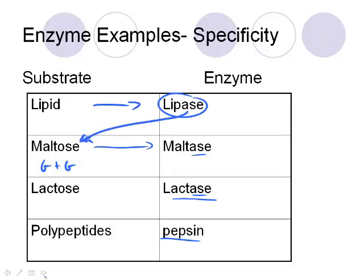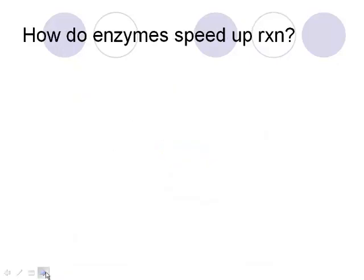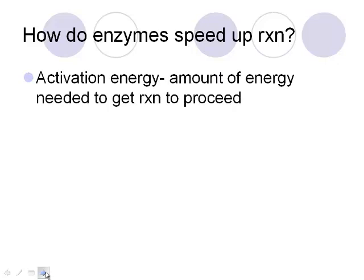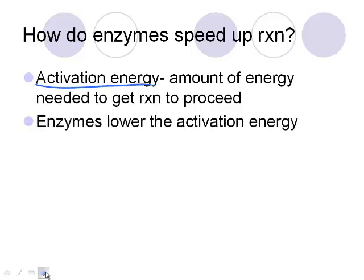If you had lipase and put it on maltose, nothing would happen — we're going to do a lab tomorrow to test some specificity. So how do enzymes actually speed up the reaction? Essentially, they lower the activation energy. Activation energy is the amount of energy needed to get the reaction going; what enzymes do is lower it, so you need to put in less energy to make the reaction happen.